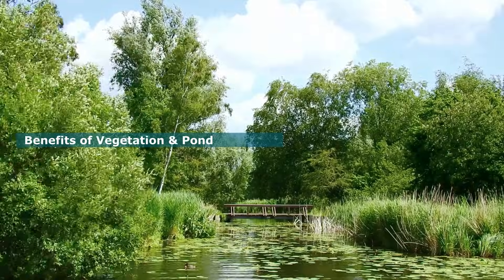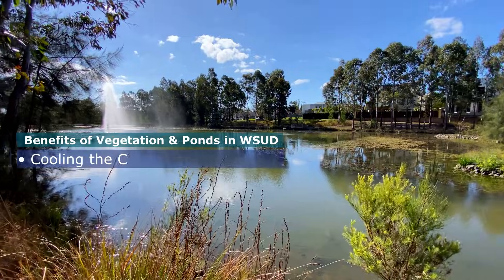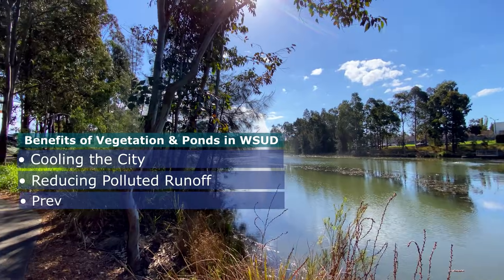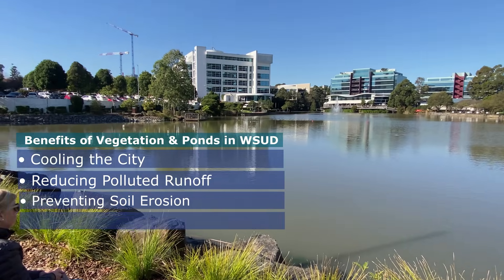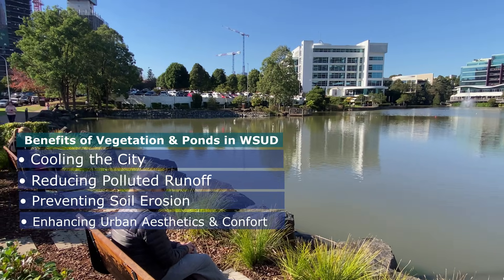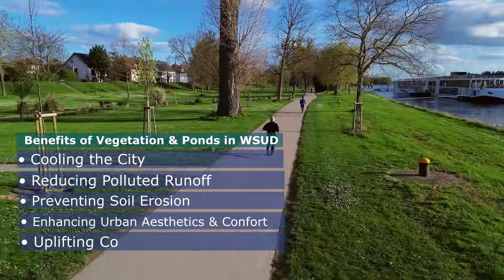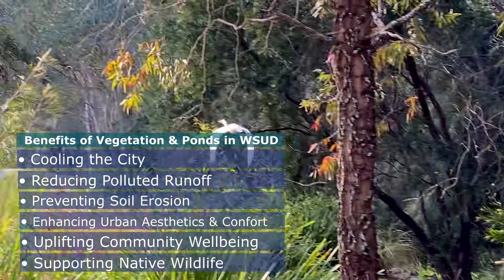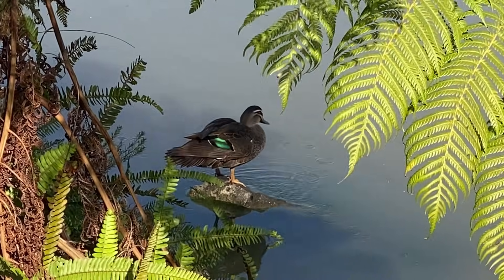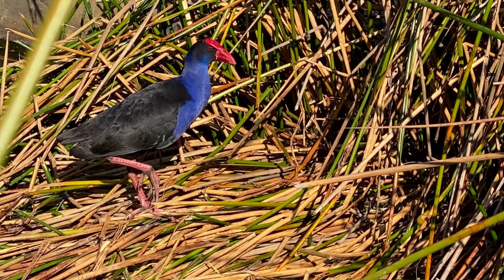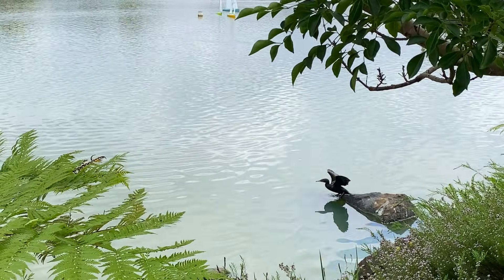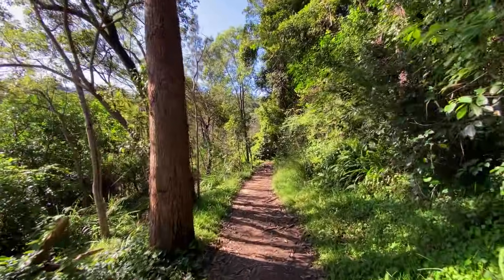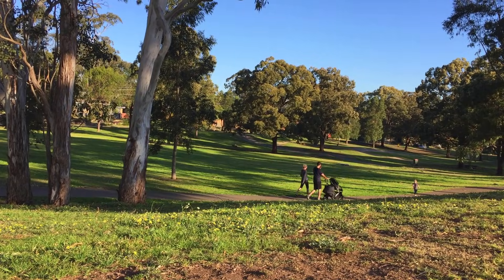Vegetation along stormwater paths cools the urban environment, reduces the negative impacts of polluted runoff and prevents soil erosion. It also enhances the aesthetic and comfort of urban spaces, uplifting resident spirits and improving habitat for native wildlife. Around these ponds, spaces are created for recreation, walking and leisure time, as shown in these examples.